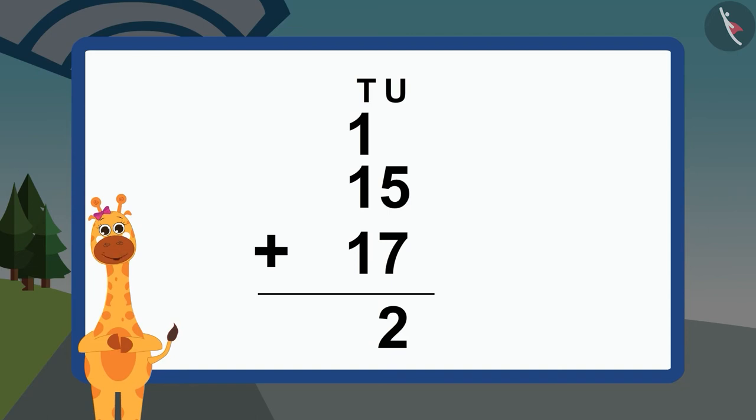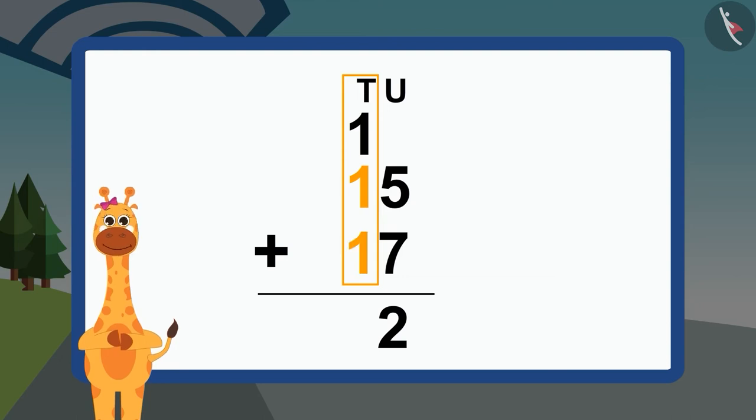Now, we have to add the numbers under the 10 section. This will be 1 plus 1 plus 1 from the carry-over, and it will equal 3. I will write the number 3 like this under the 10 section.